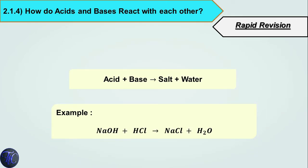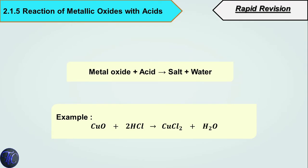Now let's see how acids and bases react with each other. When acid reacts with base, it forms salt and water, which is also known as the neutralization reaction. For example, sodium hydroxide (NaOH) reacting with hydrochloric acid (HCl) produces NaCl (salt) and H2O (water).